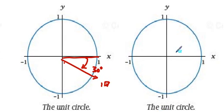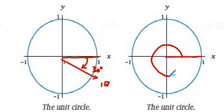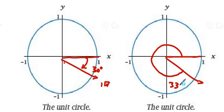To find the measure of 330 degrees, I start on the positive x-axis and go around 90, 180, 270, and an additional 60 degrees, landing at 330 degrees. This corresponds to an angle of negative 30 degrees — they are congruent, coterminal angles.